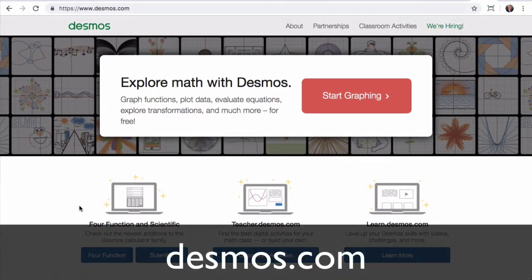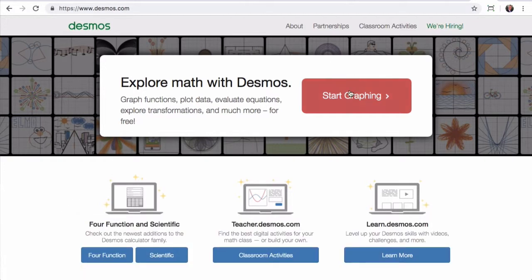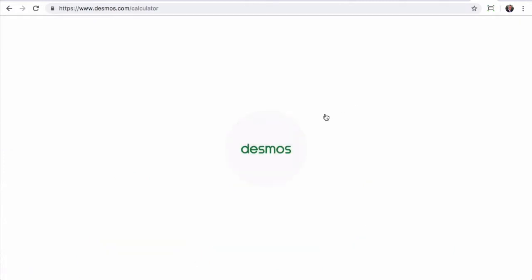Now the first thing to do is to visit Desmos.com. When you get to the page you'll see the start graphing icon here. Click on that, and that will take you to the main window.